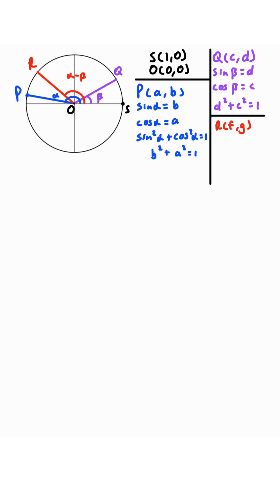Now, let's say R is located at (f,g). Then sine of alpha minus beta is equal to g, cosine of alpha minus beta is equal to f, and g squared plus f squared is equal to 1.